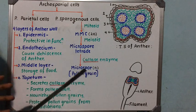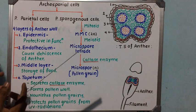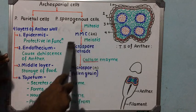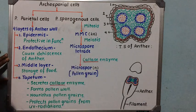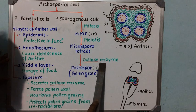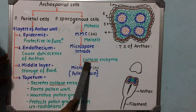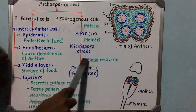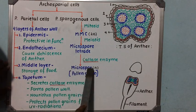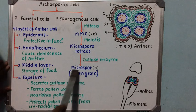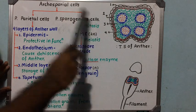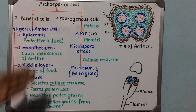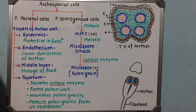The microspores produced are held together by a callose material, binding four microspores together in a mass called a microspore tetrad — the word tetrad is used because four microspores are held together. The callase enzyme produced by the tapetum acts on the microspore tetrad, dissolves the callose material, and the tetrad breaks apart so that individual pollen grains or microspores are released. In this way, pollen grains are formed from the primary sporogenous cells — this is microsporogenesis.